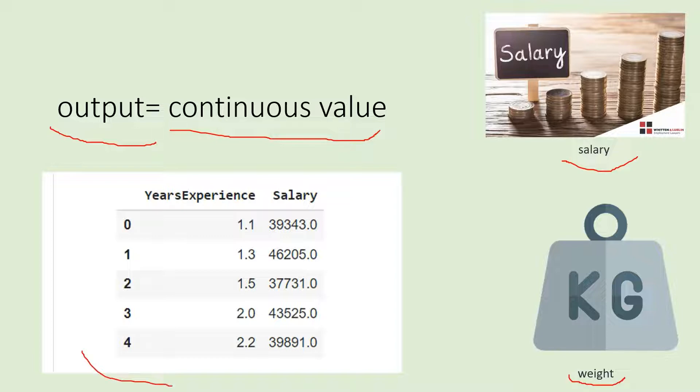Here is an example of a dataset used in regression to predict salary. The features or independent features used are years of experience, and the outcome or dependent variable is the salary. In most cases, we have more than one feature in our dataset.